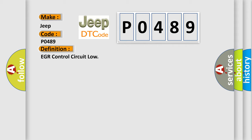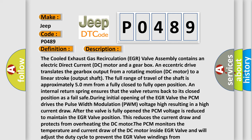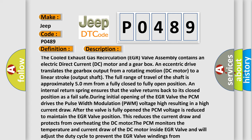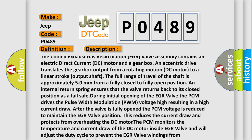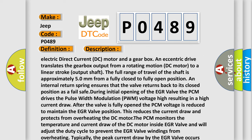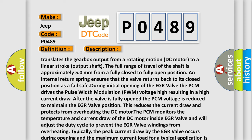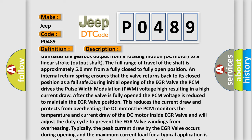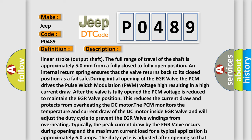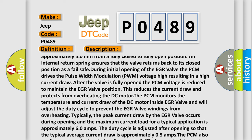Here is a short description of this DTC code. The cooled exhaust gas recirculation (EGR) valve assembly contains an electric direct current (DC) motor and a gearbox. An eccentric drive translates the gearbox output from a rotating motion to a linear stroke output shaft. The full range of travel of the shaft is approximately 50 millimeters from fully closed to fully open. An internal return spring ensures the valve returns to its closed position as a fail-safe. The PCM drives the pulse width modulation (PWM) voltage high, resulting in a high current draw. After the valve is fully open, the PCM voltage is reduced to maintain the EGR valve position, reducing current draw and protecting the DC motor from overheating.